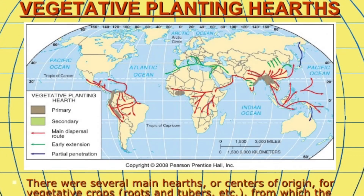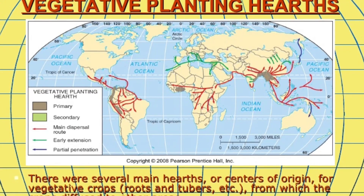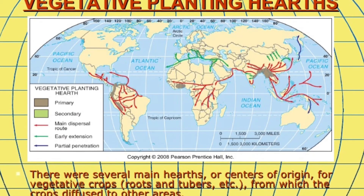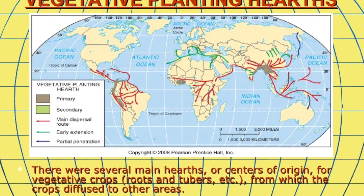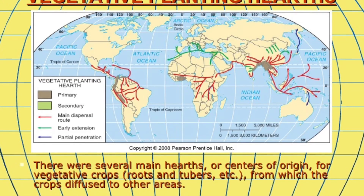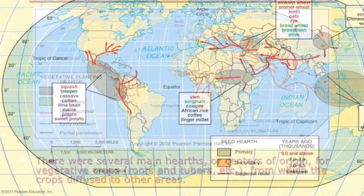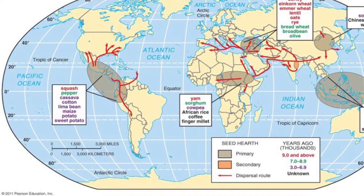According to cultural geographer Carl Sauer, the earliest forms of plant cultivation was vegetative planting — in which new plants are produced by direct cloning from existing plants, such as cutting stems and dividing roots. Sauer believed this probably began in the diverse climates and topography of Southeast Asia, where a wide variety of vegetation existed. Roots like taro and yam, and tree crops like bananas and palm, were the first to be vegetatively planted. This diffused northward and eastward to China and Japan, and westward through India, Southwest Asia, Africa, and the Mediterranean. Dogs, pigs, and chickens were the first domesticated animals, also first domesticated in Southeast Asia. Sauer also identified seed agriculture — the production of plants through annual planting of seeds — which came later, and most farmers today practice it.